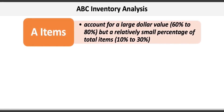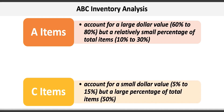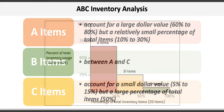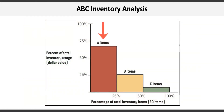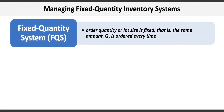Class A items require close control by operations managers — they typically account for a large dollar value, somewhere between 60 and 80 percent, but a relatively small percentage of total items, somewhere between 10 and 30 percent. Class C items need not be as closely controlled and can be managed using automated computer systems — they typically account for a small dollar value, between 5 and 15 percent, but a large percentage of total items, perhaps 50 percent or more. Class B items fall somewhere in the middle. In a sample breakdown, A items represent about 65% of dollar value and 25% of items; B items represent under 25% of dollar value and about 25% of items; and C items represent about 10% of dollar value but 15% of total items.